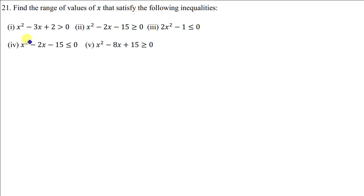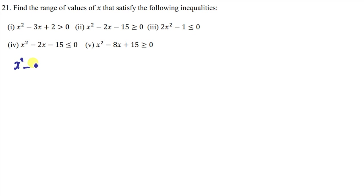The first thing that we need to find when you've been given such a question is what are known as critical points. So we have the question x squared minus 3x plus 2. To find critical points, we equate the equation to zero.